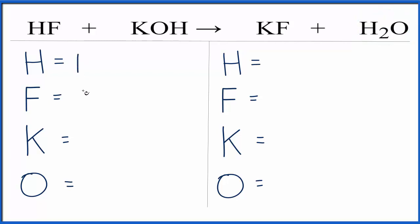We have one hydrogen, and don't forget we have another one over here, so that gives us a total of two hydrogen atoms, one fluorine, one potassium, and then the one oxygen.